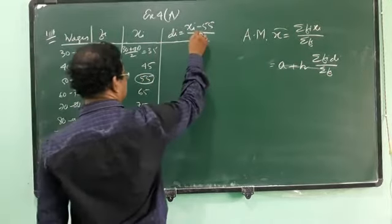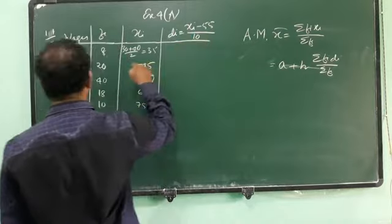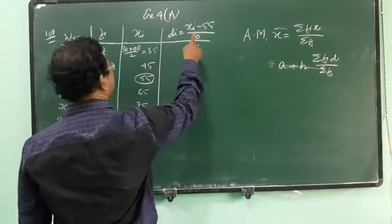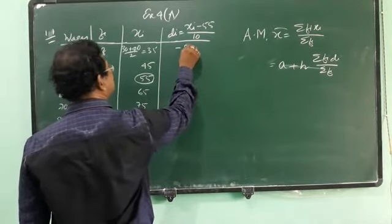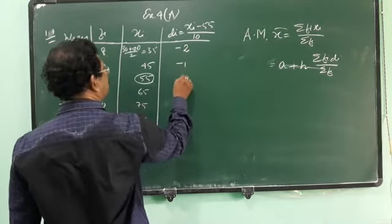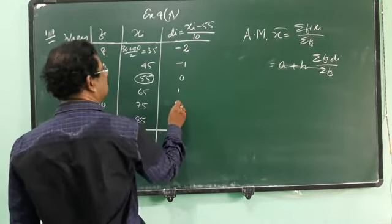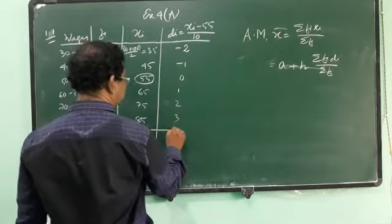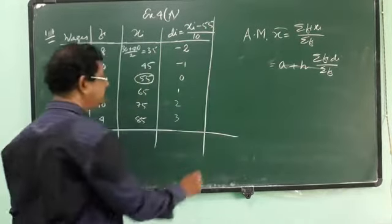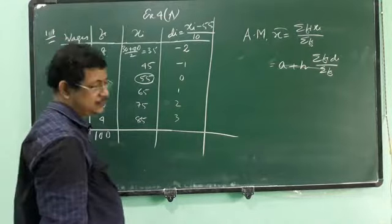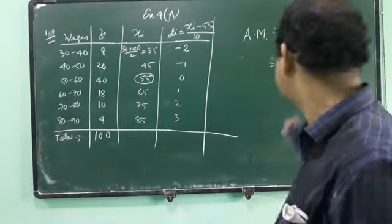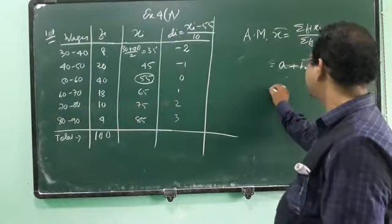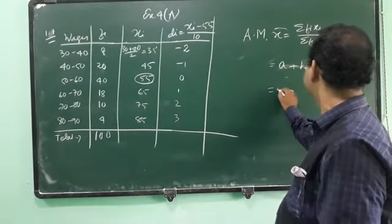In the mean, we take a as 55, divided by h. Our class width is 10. So now you see 35 minus 55 is 20 divided by 10, this one is minus 2, minus 1, 0, 1, then 2, then 3. So this is our di. This new variable we have introduced and we are doing step deviation method. Step deviation formula is this. Here a I have taken it was 55.